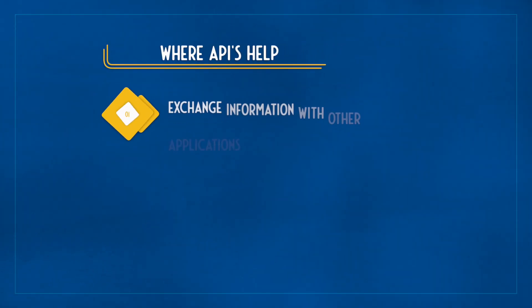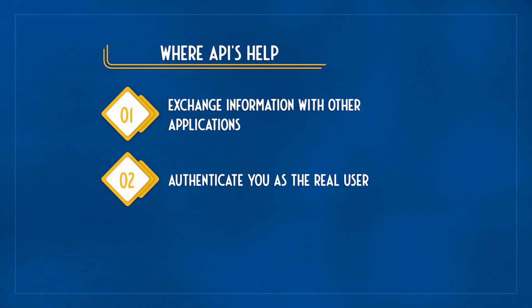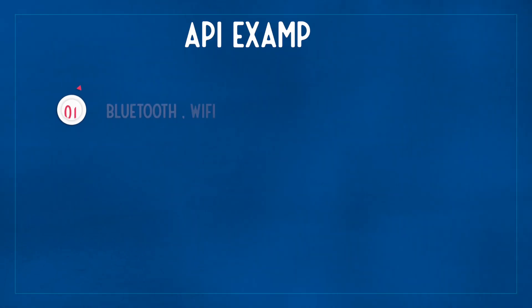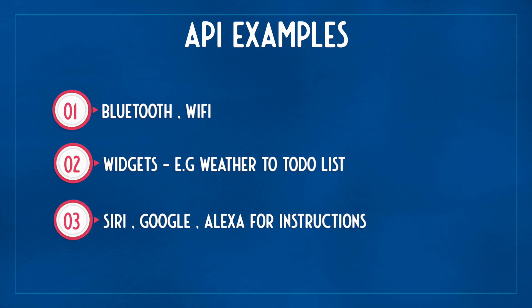APIs help you exchange information with other applications, authenticate you as the real user for security reasons, and hide the complexity of the entire transaction. Examples could be how you set up Bluetooth or Wi-Fi in your computer, or by adding widgets to extend the functionality like adding weather to a to-do app, or voice assistants like Siri, Google, or Alexa. It's hard to find a service that doesn't have an API linked to it.